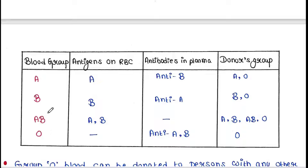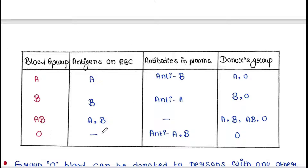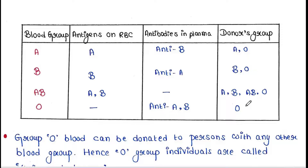Similarly, blood group B contains B antigens on their RBC and they have anti-A antibodies in their blood plasma, and the donors must have B or O blood group. The person with AB blood group has A and B antigens on their RBC and no antibodies in the plasma, so the donors could have A, B, AB, or O blood group. The O blood group person doesn't have any antigens on their RBC and has both anti-A and anti-B antibodies in their blood plasma, and the donors must have O blood group.